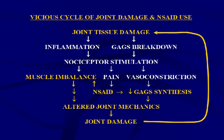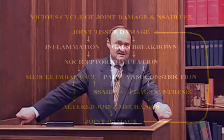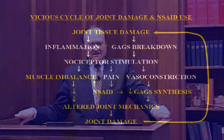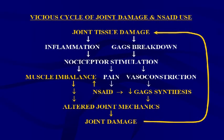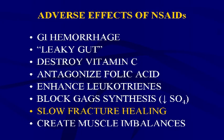Returning to the vicious cycle of joint damage and NSAID use: nociception stimulation causes pain, which drives NSAID use — chronic NSAID use — when it should cause fatty acid use. NSAID use then causes muscle imbalance feeding into altered joint mechanics. NSAID use also decreases GAG synthesis, decreasing synthesis of cartilage in the injured area that needs to heal, creating more joint damage and perpetuating the vicious cycle.